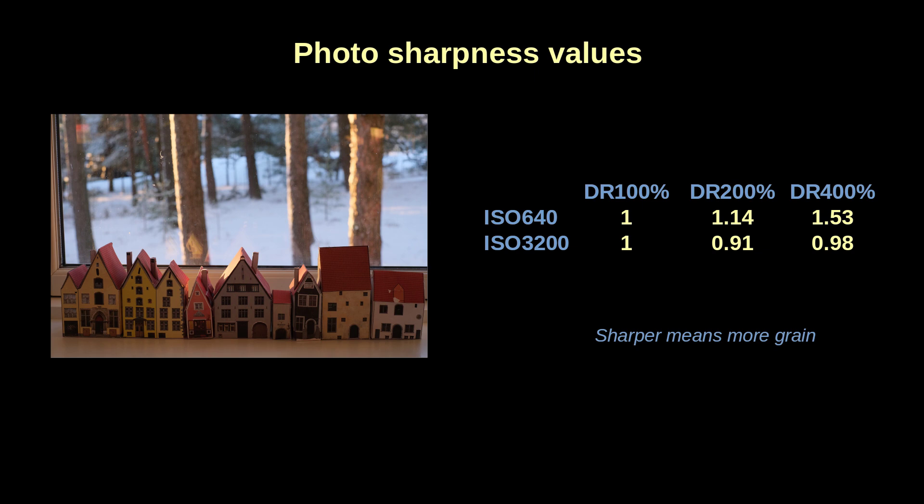But at ISO 3200, the already existing grain is being played around in the shadows to form mud. The overall noise is not affected much at higher DR settings as the sharpness measuring method sees it — in fact, the graininess is going down if anything. So seemingly the noise is not increased, while in fact what's happening is a loss of detail.